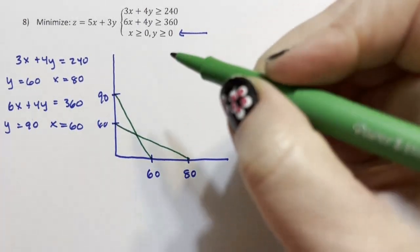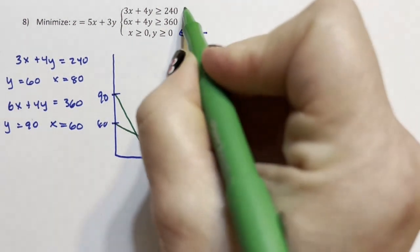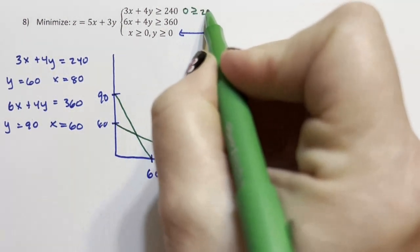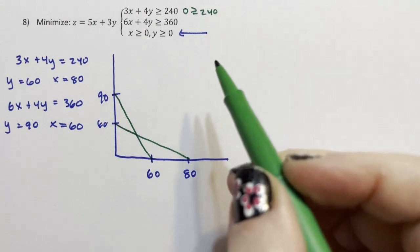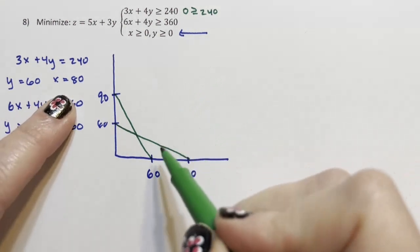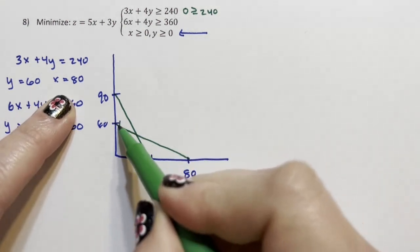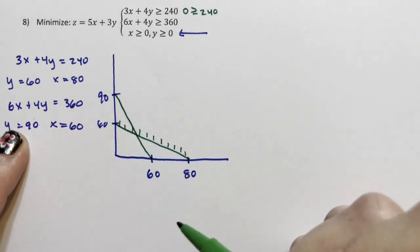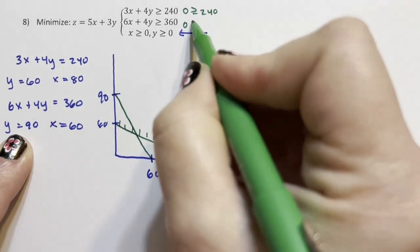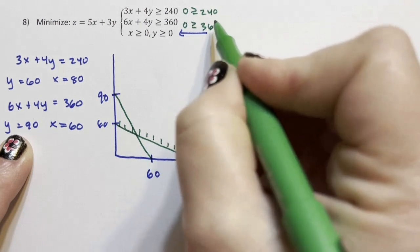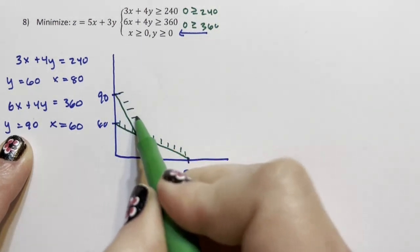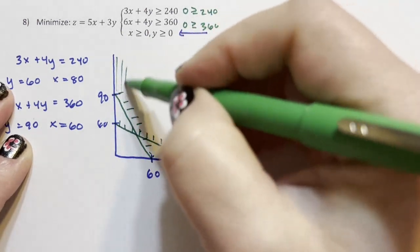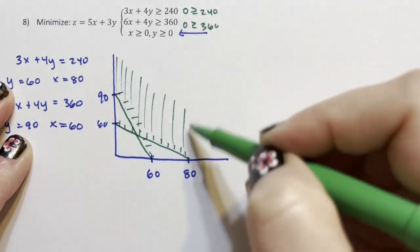And then I'm going to test the origin. Is zero greater than or equal to 240? That is not true. So we don't go towards the origin, we go away. And then we test the next one. Is zero greater than or equal to 360? That is also not true. So we go away. And we know we're in the first quadrant, which means we are shading this area.